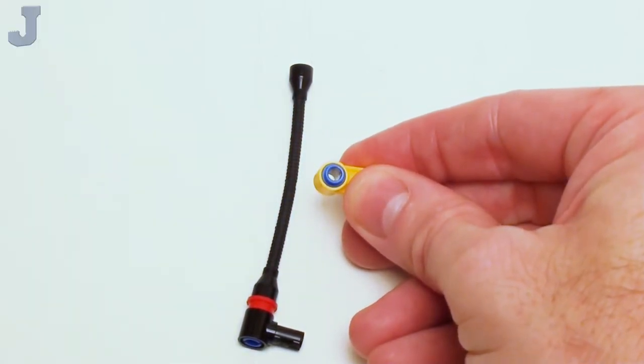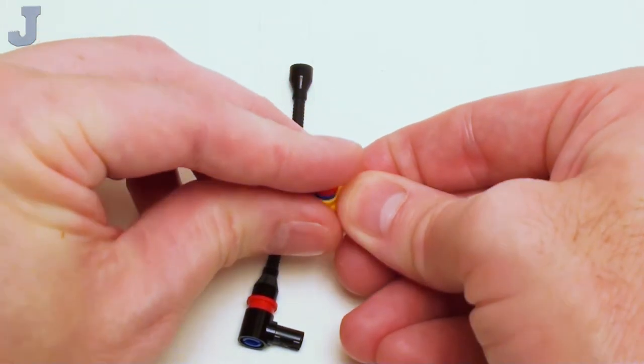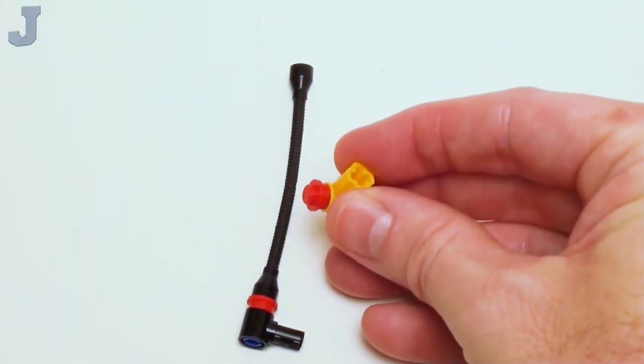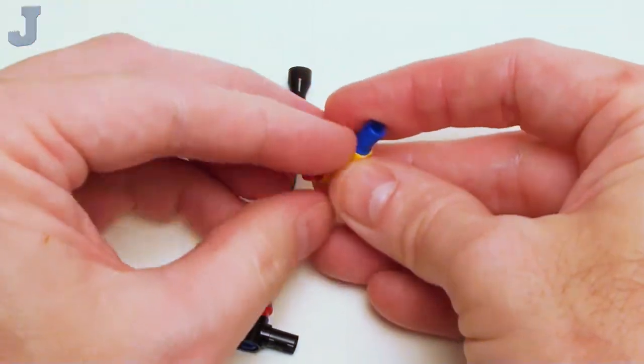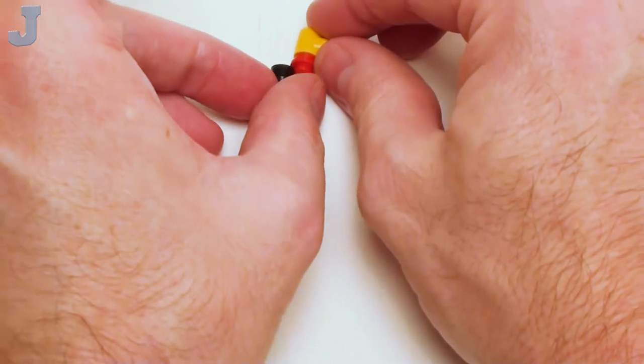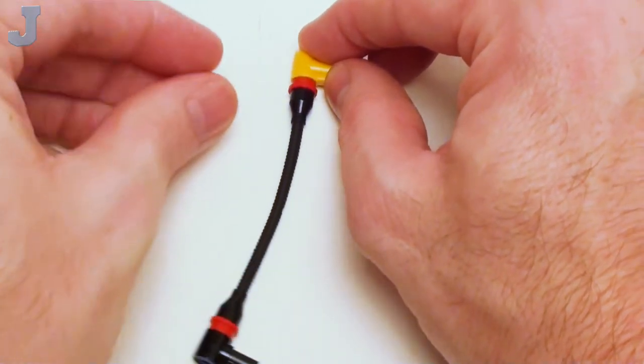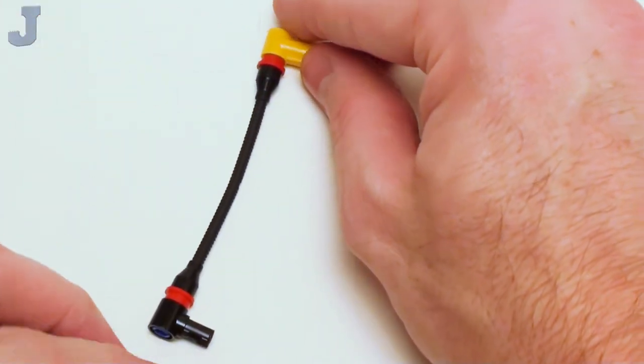Next, take a 1 by 1 technic beam with cross axle. I'm going to set a technic pin with stud in that area, followed by a stud. And here I'm going to take a friction pin with cross axle and place the cross axle in like so. Then I'm going to simply just place this portion right on top of the other end of the hose.